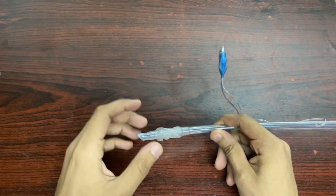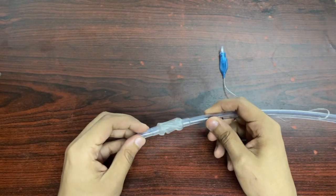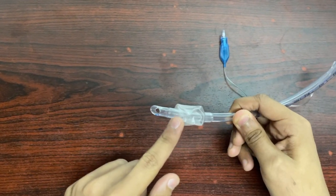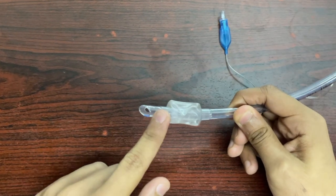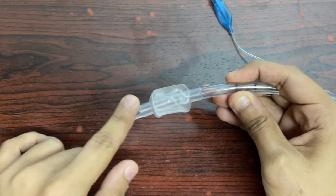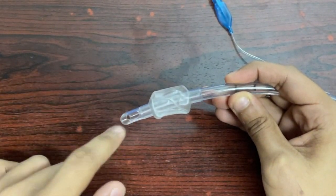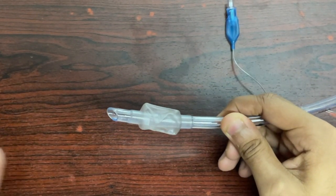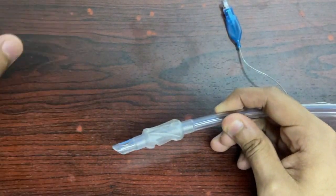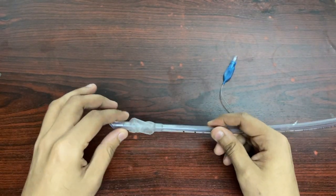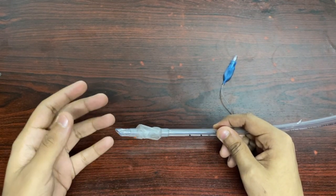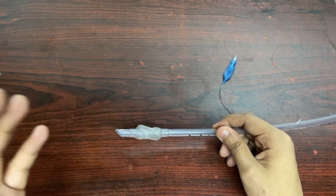The distal part of the endotracheal tube has a non-traumatic beveled end. We can see that the terminal section is open and the beveling is towards the left side. Also, a sub-terminal opening towards the right side is provided for equal and bilateral ventilation of both the left and right lungs. Just before the two openings we have the cuff of the endotracheal tube. Endotracheal tubes are available in uncuffed varieties as well.